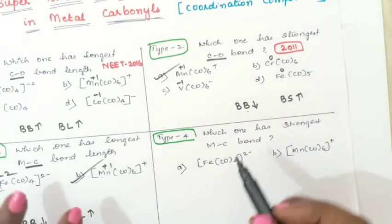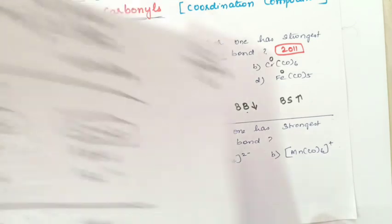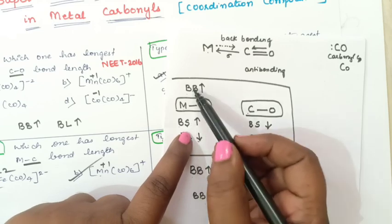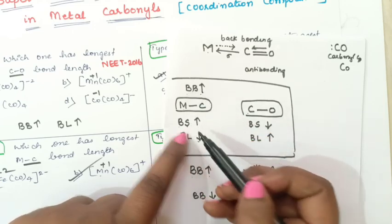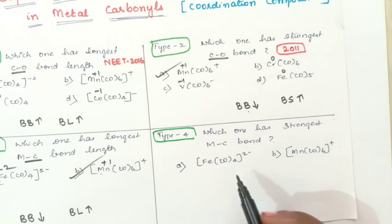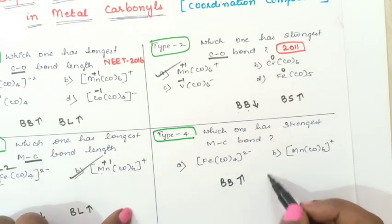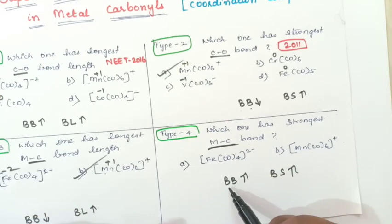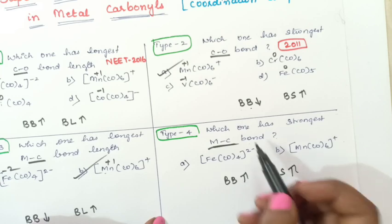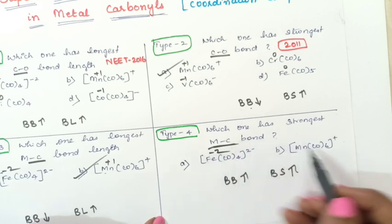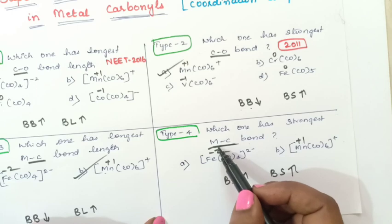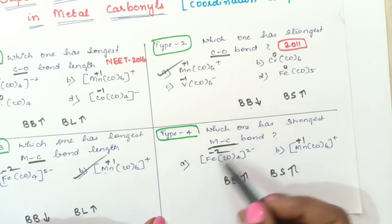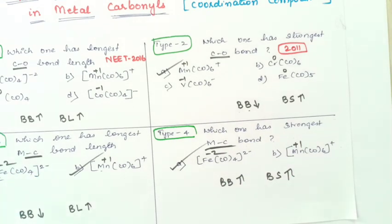Fourth type of question: which one has the strongest MC bond? When backbonding is more, MC bond strength is also more — both are directly related. So we need to find where backbonding is more, which is where negative charge is more. Fe has minus 2 charge and Mn has plus 1 charge. Negative charge is more on Fe, so backbonding will be more and MC bond strength will also be greater. Option A is the correct answer.